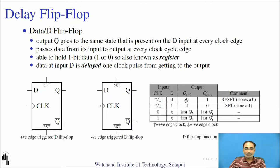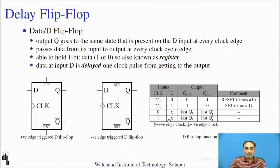If D is 0, the state of Q after the clock edge is 0. If D is 1, the state of the output after the clock edge is 1. When Q is 0, this state is called the reset state; when Q is 1, it is called the set state. You can also think of these as storing 0 and storing 1 respectively. Between clock edges the flip-flop will not respond to the D input, so the last value of Q will be stored in the D flip-flop.